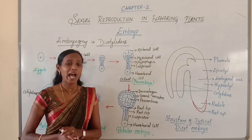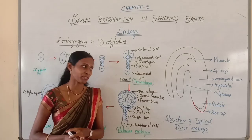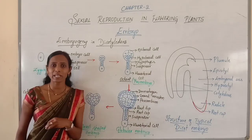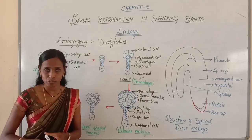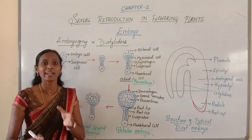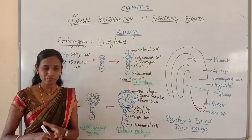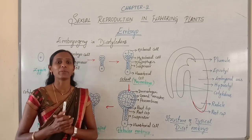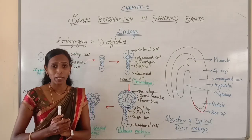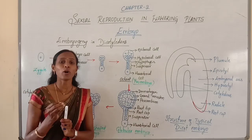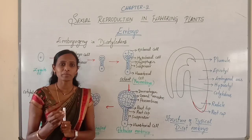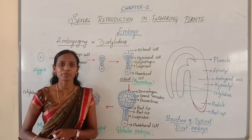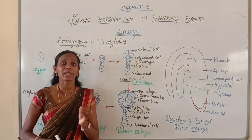After fertilization, the zygote which is present at the micropilar end undergoes a period of rest, then it divides to form the embryo. Initially the zygote is in the resting stage, and later it divides to form the embryo. Very importantly, most zygotes divide only after the formation of a certain amount of endosperm.